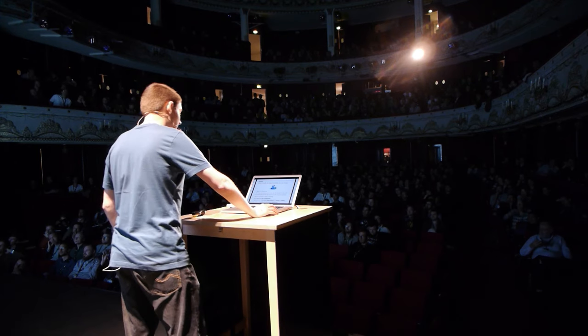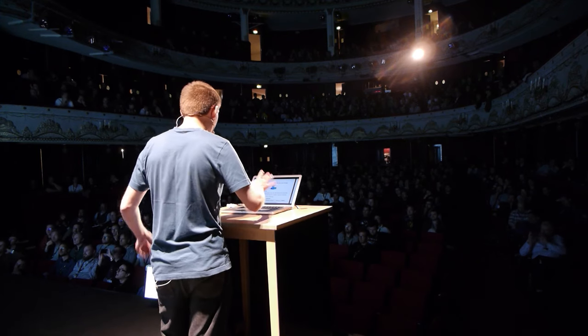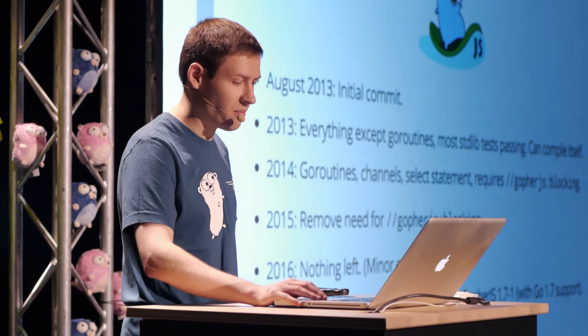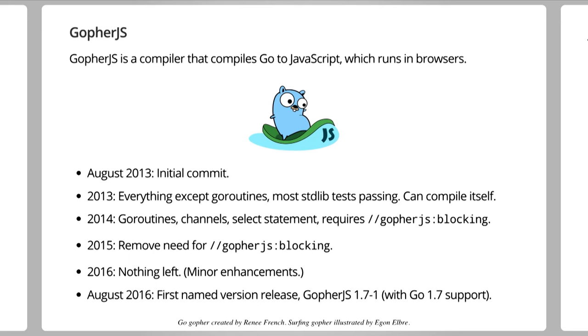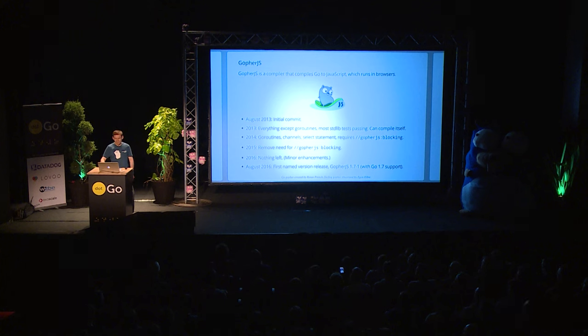To give you a little bit of its history: it was created in 2013 and had everything except goroutines running — most of the standard library tests were passing, and it could compile itself. 2014 added goroutines, channels, and a select statement with a caveat. In 2015, that caveat was removed. And there's nothing left to do in terms of language features in 2016. I want to give a special thank you to Richard Musil, the creator of GopherJS. He did most of the heavy lifting. So if there's anything cool you like in this presentation, you should probably find him and thank him after.